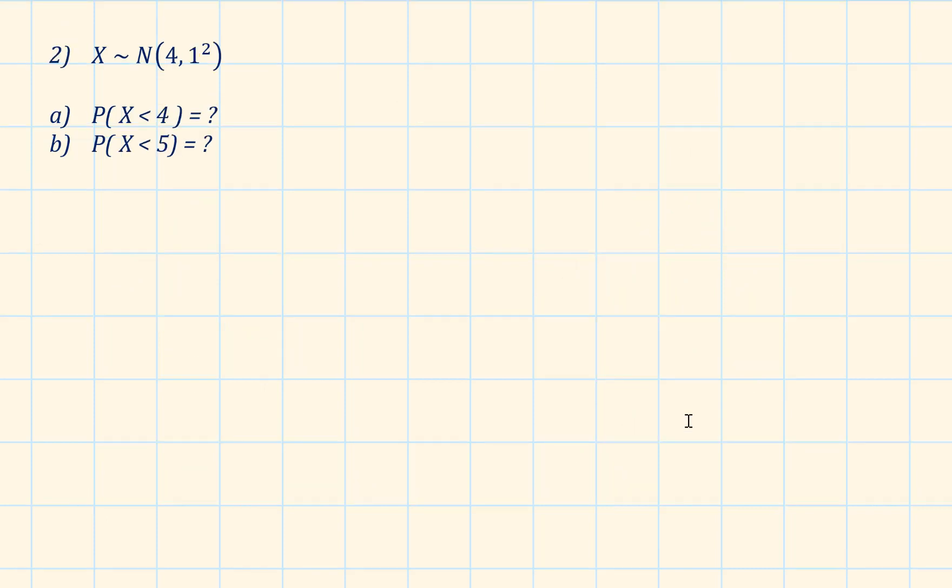Question 2. X is normally distributed with a mean of 4 and standard deviation 1. Find the probability that x is less than 4. As you can see on the shaded sketch, this represents half of the data, so the probability is 50%.